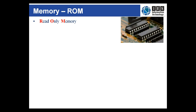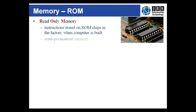Another type of memory that's embedded into your computer motherboard and other devices is Read Only Memory or ROM. Instructions stored on the ROM chip are written at the time of manufacture, and it's permanent memory — or at least semi-permanent. Data will remain in ROM when the power goes off, and therefore unlike RAM it's defined as non-volatile.